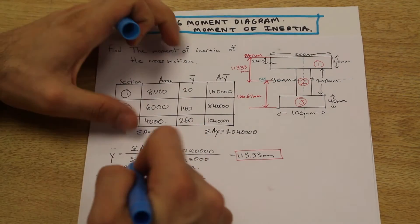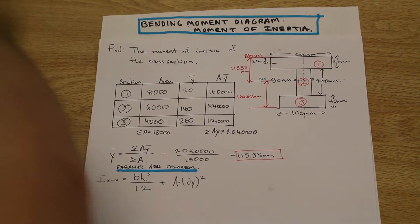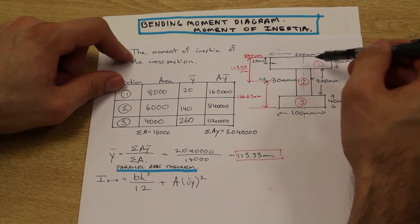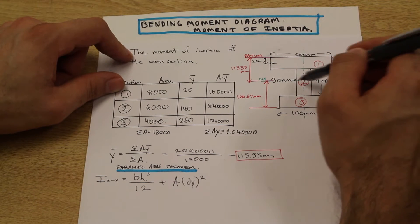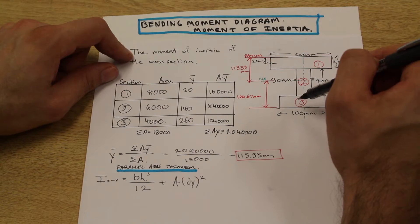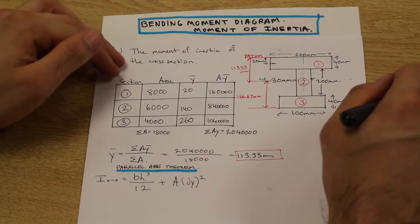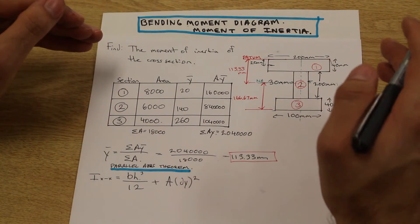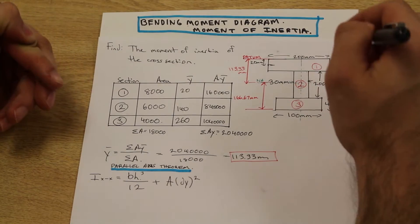Okay, we have base times height to the third power over 12 plus A times dy squared. This is called the parallel axis theorem. Because our shape isn't symmetrical and every part of the cross-section is not passing through the x-axis, we're going to need to apply this to every shape in the cross-section. I know that explanation maybe sounds a little bit convoluted, but I think you'll understand once we start to solve a problem or two. So let's begin.